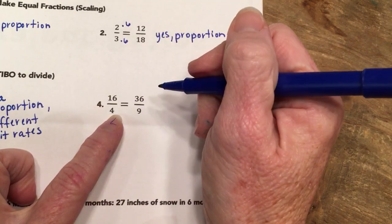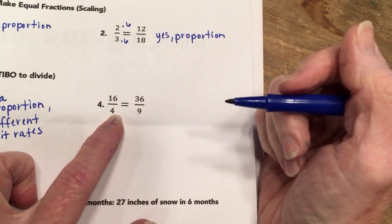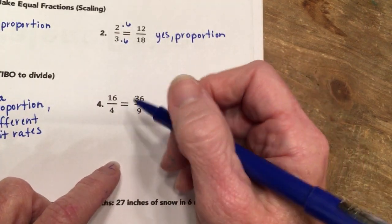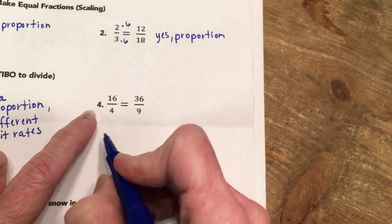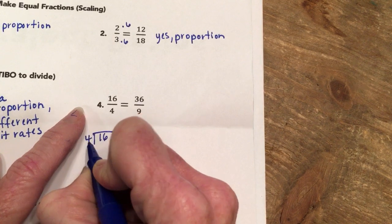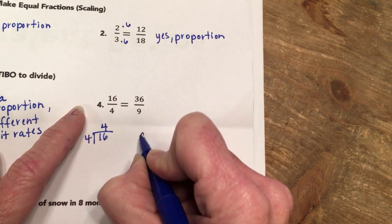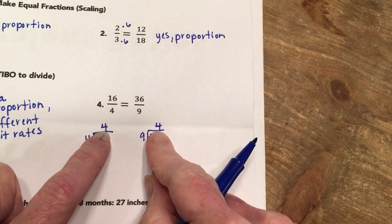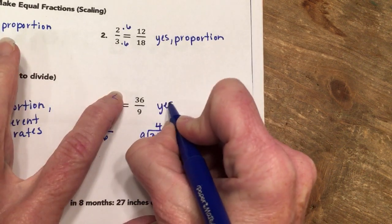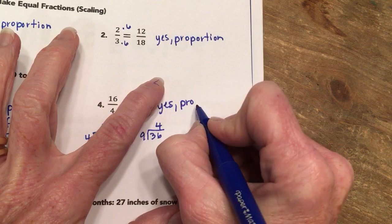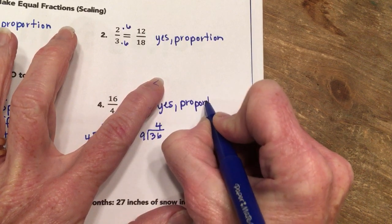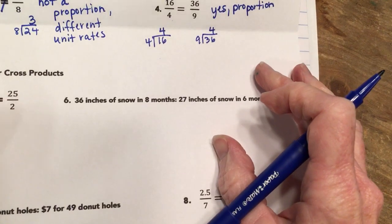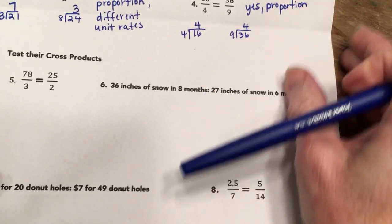For number four, I'm again using unit rates. There's always more than one way to do a problem, but I'm demonstrating the unit rate method here. I divide top by bottom: 16 divided by 4 is 4, and 36 divided by 9 is also 4. Since I got the same unit rate for both, yes, it's a proportion.